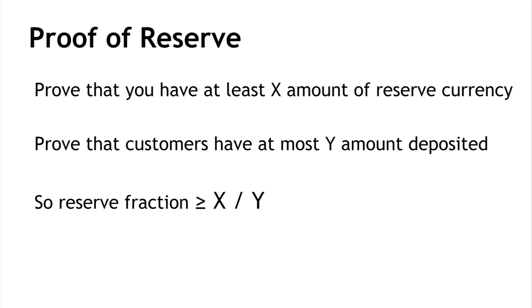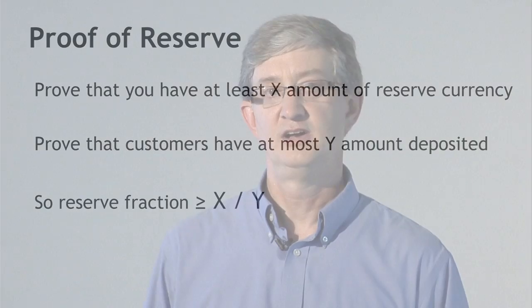So if a Bitcoin exchange wants to prove that they hold 25% reserves on all deposits, or 100%, they can do that in a way that's independently verifiable by anybody, and no central regulator is required. That's an aspect of regulation that Bitcoin exchanges can prove voluntarily, though other aspects of regulation, as we'll see in a later lecture, are harder to guarantee.